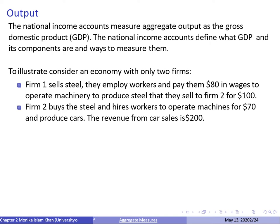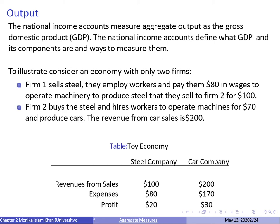To explain how we measure GDP, we can use this particular example. Let's imagine a toy economy with two firms. One is a steel company that sells steel, and the other is a car company that buys steel and produces cars. The steel company sells its steel for $100 and pays $80 in wages to its workers, so their profit is $20. The car company sells cars worth $200, with costs of $100 for steel and $70 for operating machines, giving them a profit of $30.